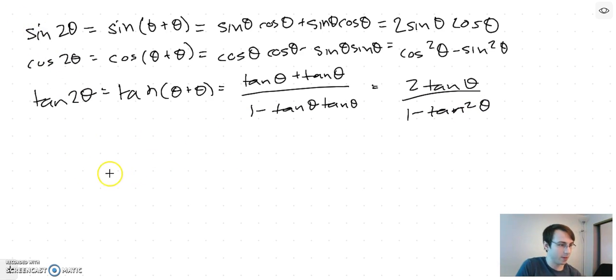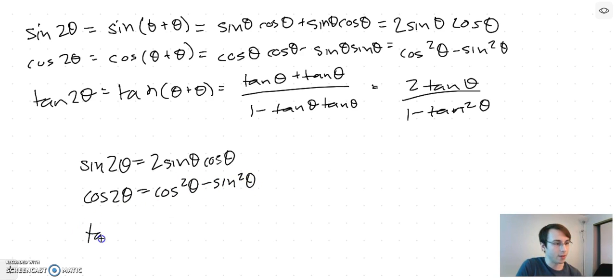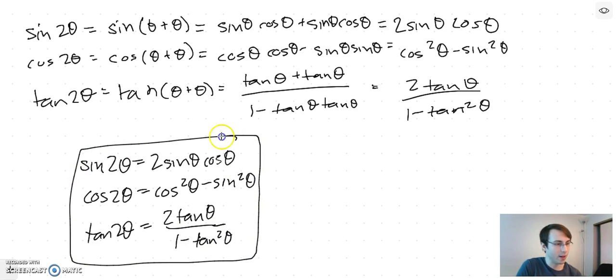So let's write it down again. sin 2θ equals 2 sin θ cos θ. cos 2θ equals cos² θ minus sin² θ. And tan 2θ equals 2 tan θ over 1 minus tan² θ. These are your double angle formulas.